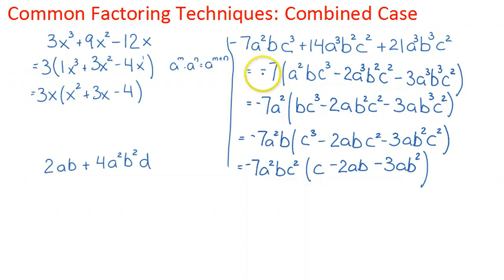Two things to note about this example. Notice I factored out the negative 7 with the leading coefficient there. I typically like to pull that negative right out. It's a personal preference. You could have factored out 7 just as well.